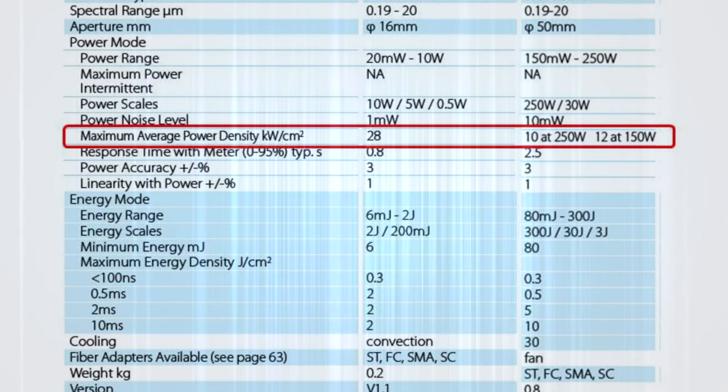Both sensors use the same absorber type. The Ophir specifications for damage threshold are always given for the highest power of use for a particular sensor, something which is not done by most other manufacturers.